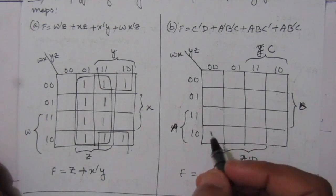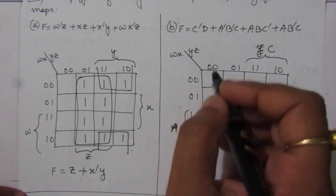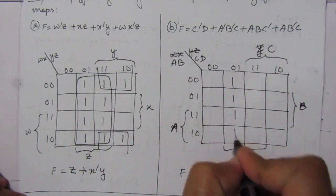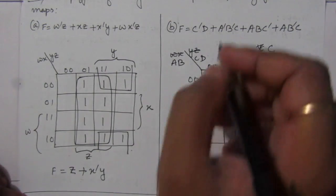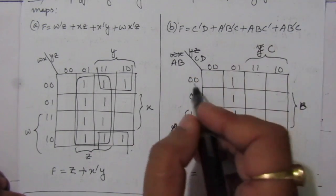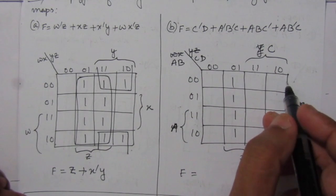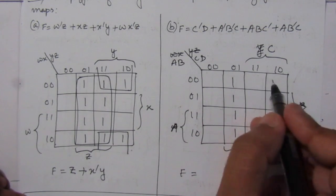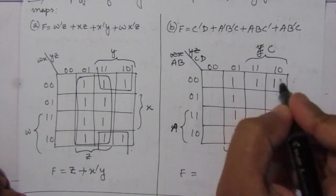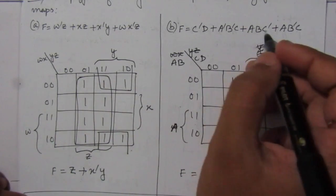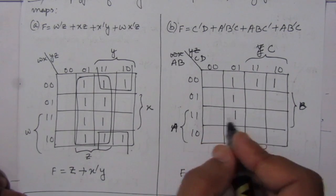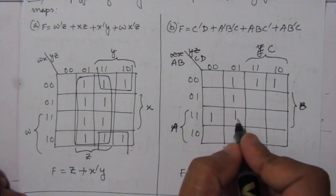Now let us solve the second problem. The first term is C-bar D, so we put one in that full column. Then we have A-bar B-bar C: A-bar B-bar is that row, and C is one for those two values, so we put one there. The third term is ABC-bar: AB is the third row, and C-bar covers the first and second columns, so we put another one there.